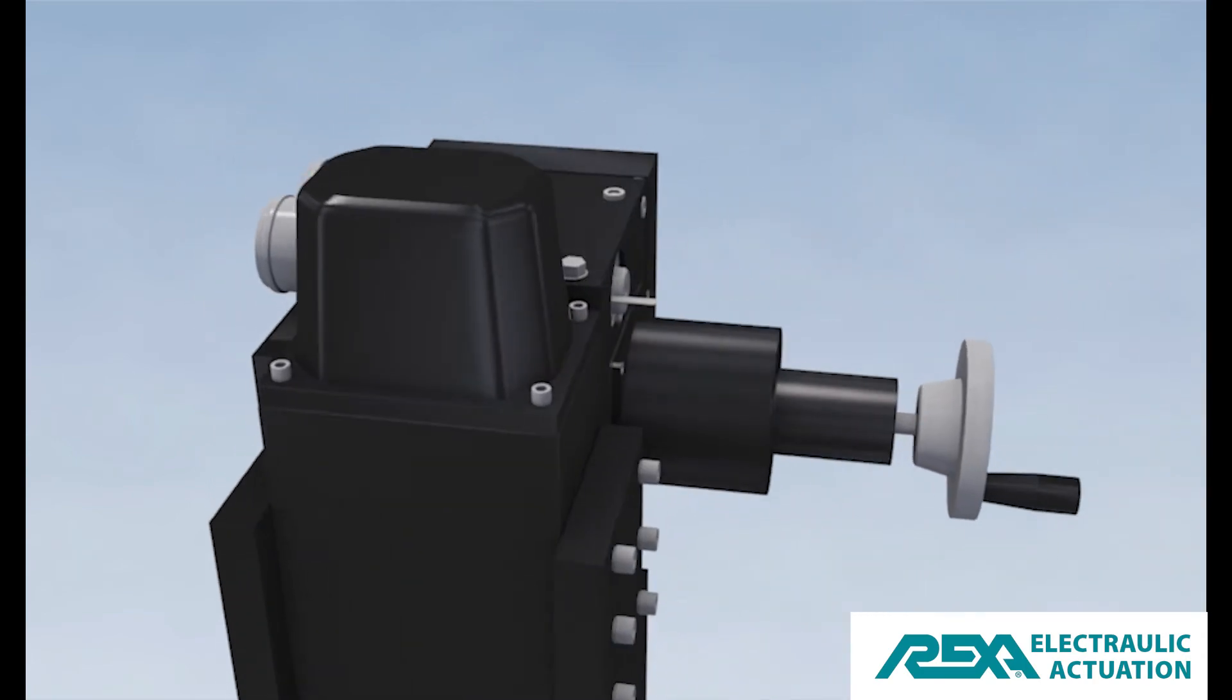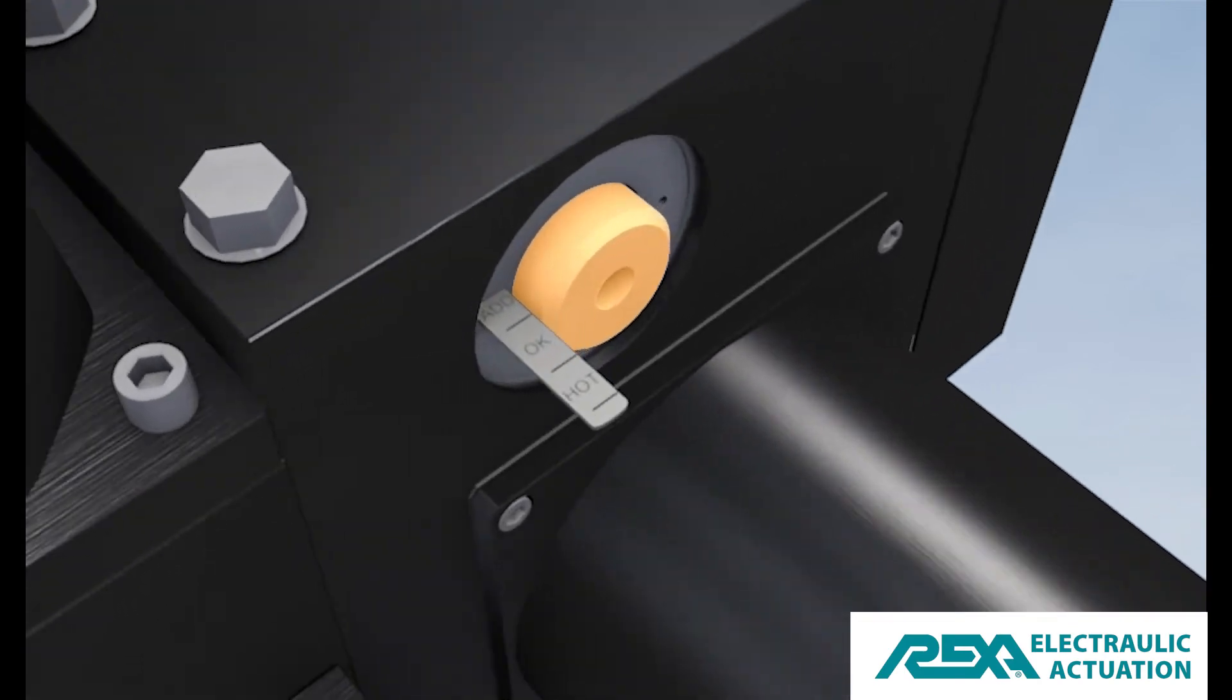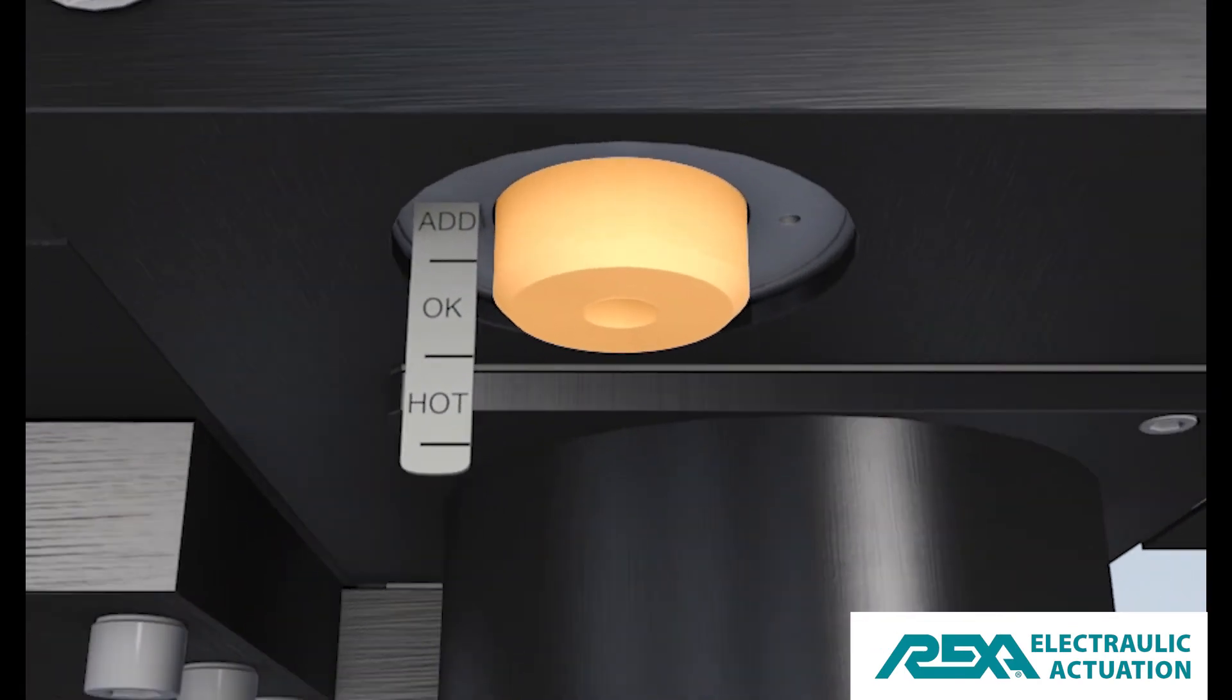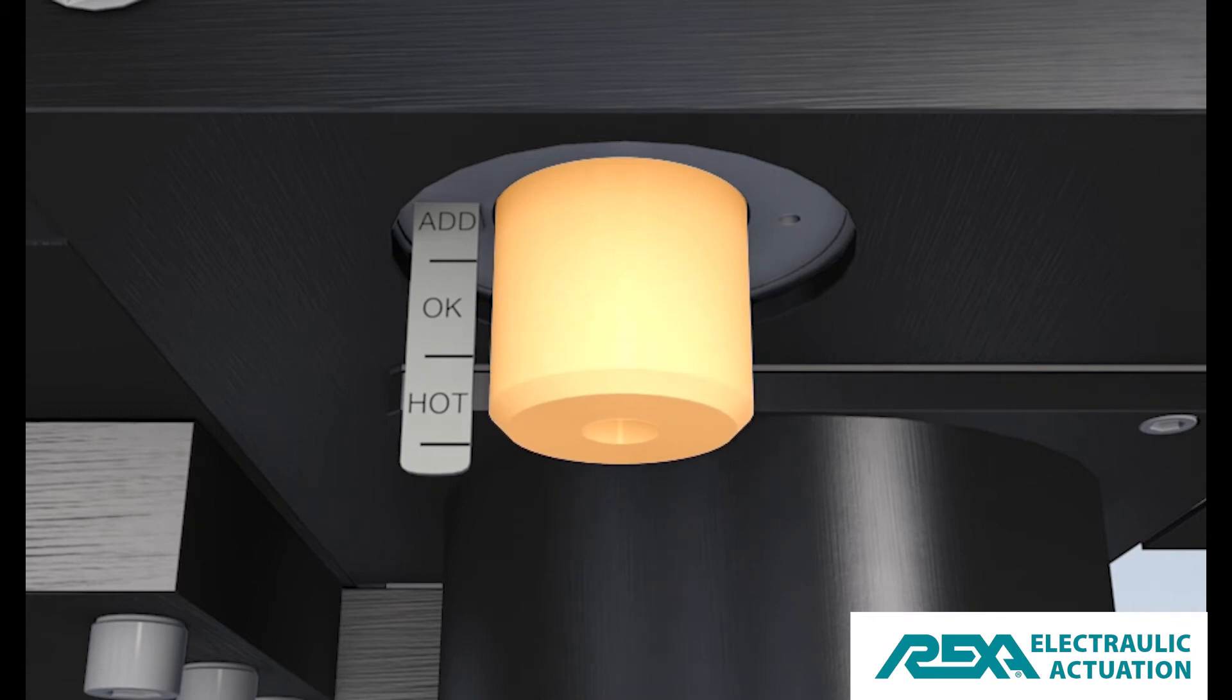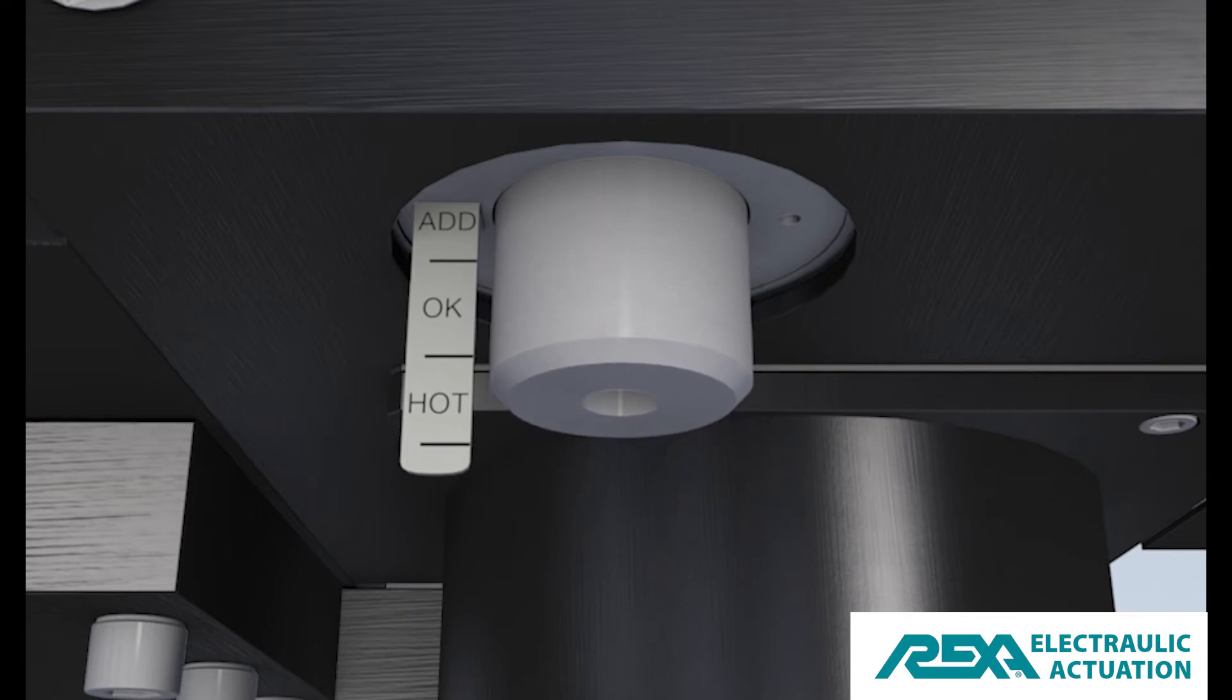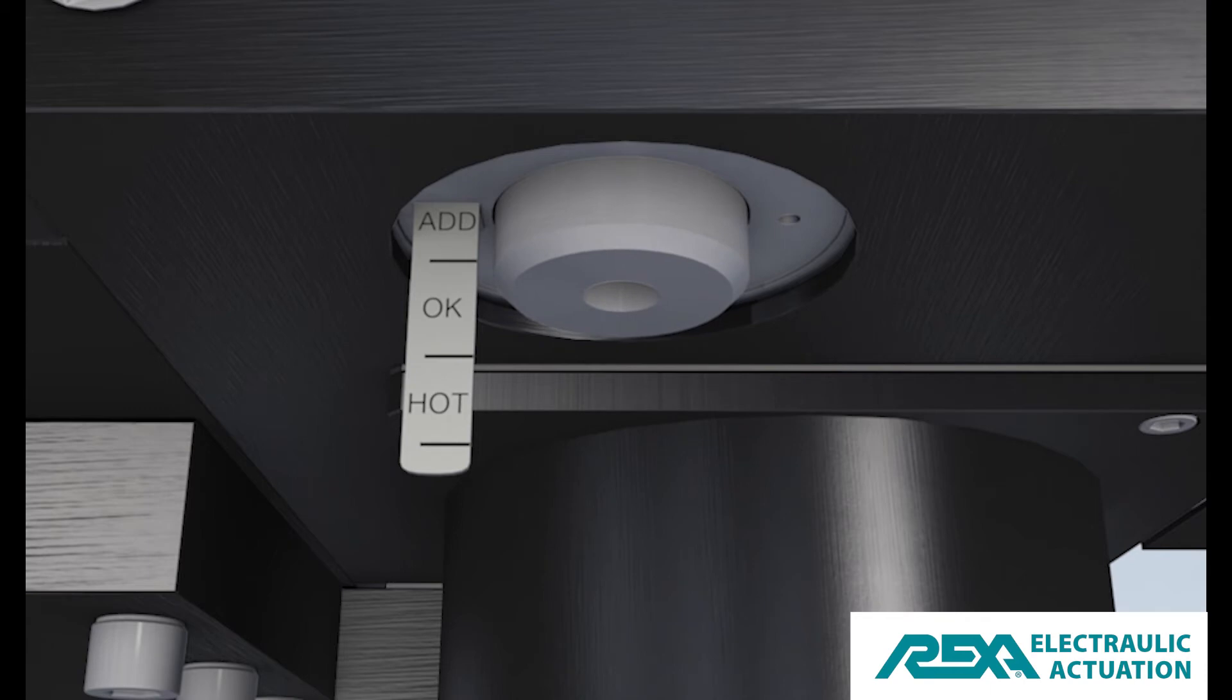The REXA actuator contains a thermal expansion chamber that provides an auxiliary volume for expansion and contraction of oil as it heats or cools depending on plant environment and operating conditions. The spring-loaded oil level indicator moves in and out along a level scale to identify the system oil level.